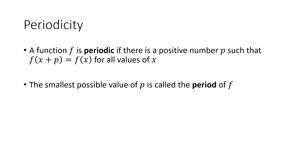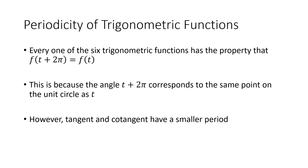What about periodicity? This isn't something we normally encounter with non-trigonometric functions like polynomials, exponentials, or logarithms. Trigonometric functions have the property that when you add a particular number to your input, you get the same output as without adding it. The smallest such value is called the period. All six fundamental trigonometric functions have this property because rotating an additional 2π radians from any angle returns you to the same point on the unit circle — so adding or subtracting any multiple of 2π gives the same trig values.